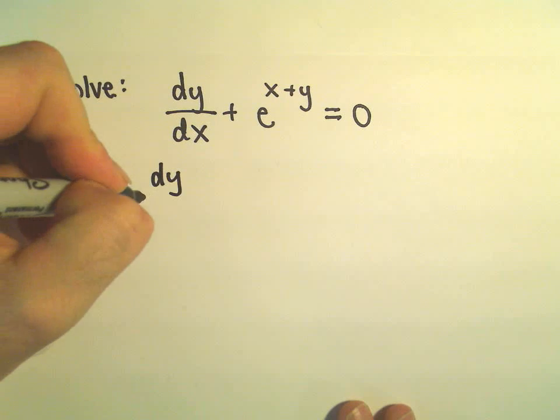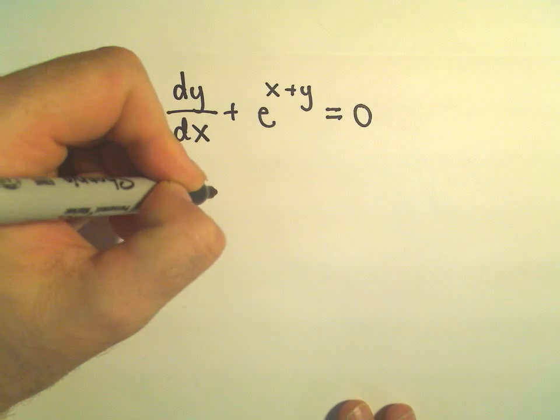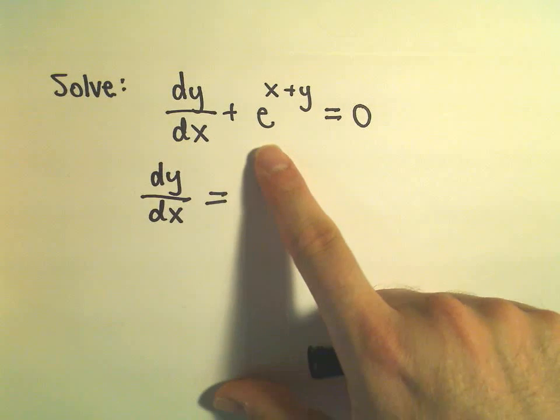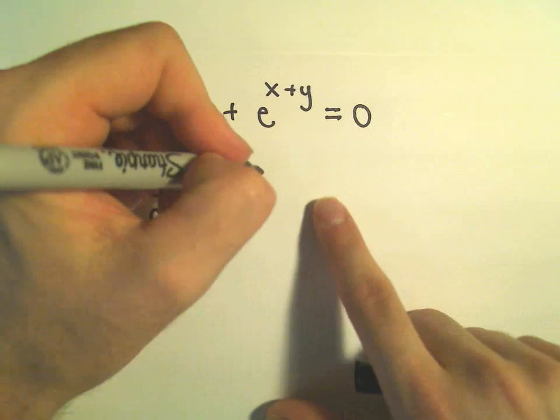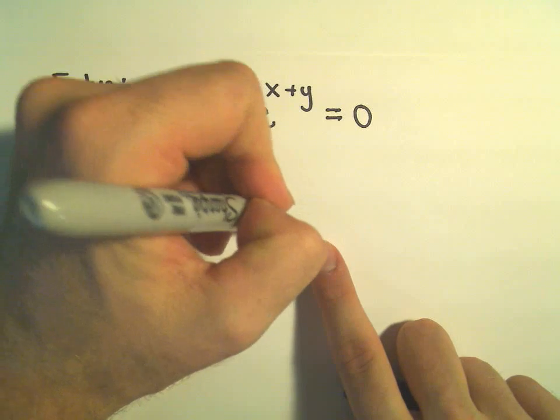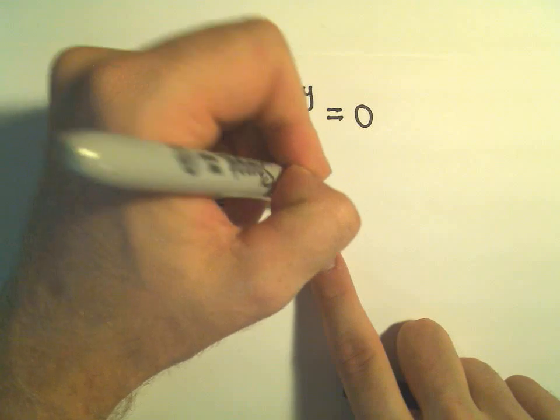So I'm going to start off by writing this dy over dx. I'm going to subtract the e to the x plus y to the right side, so I'll get negative e to the x plus y.